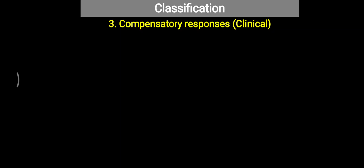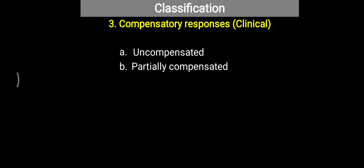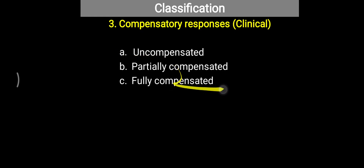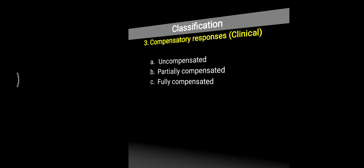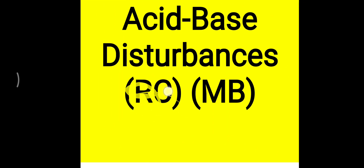Sometimes acid-base disturbance is also classified based on clinical aspects, into three varieties. Uncompensated is the pure variety of acid-base disturbance. If the disturbance continues for a longer duration, partial compensation or compensatory mechanisms begin in the body — this is called partially compensated. The third type is fully compensated acidosis or alkalosis. How to identify these types of disturbance will be covered in another video.